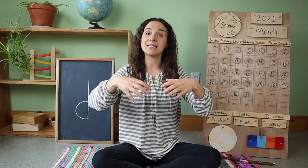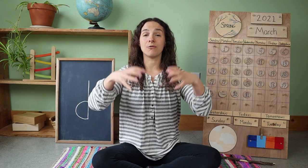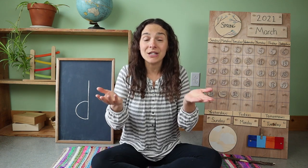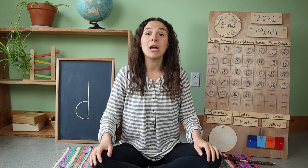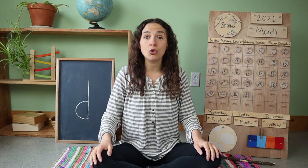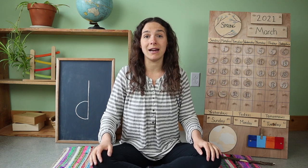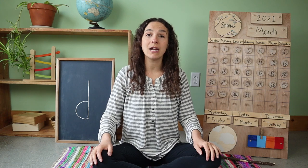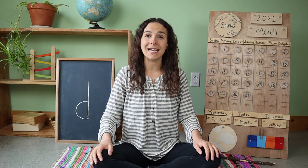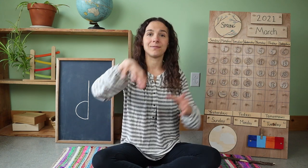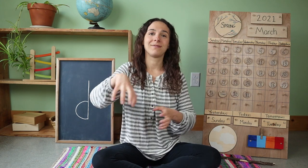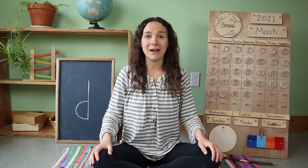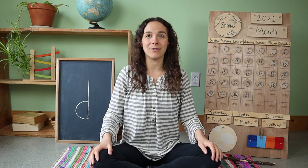Now this is a light rain. But sometimes, even in the springtime, you have a stormy, heavy rain. And if you want to show a stormy, heavy rain, you go like this. That's how you say rain in sign language.